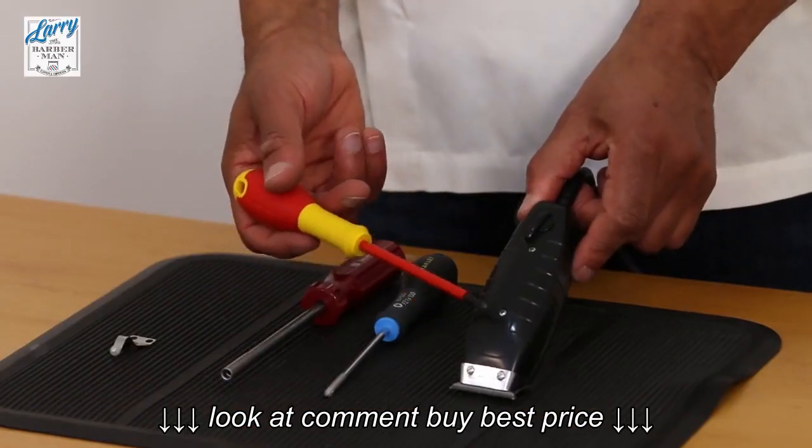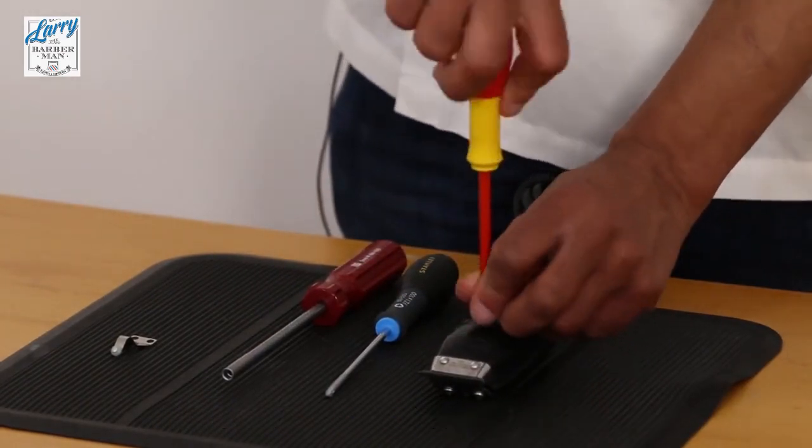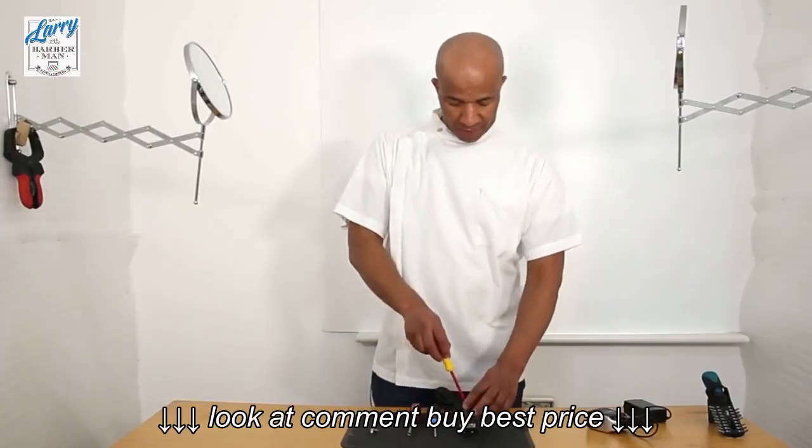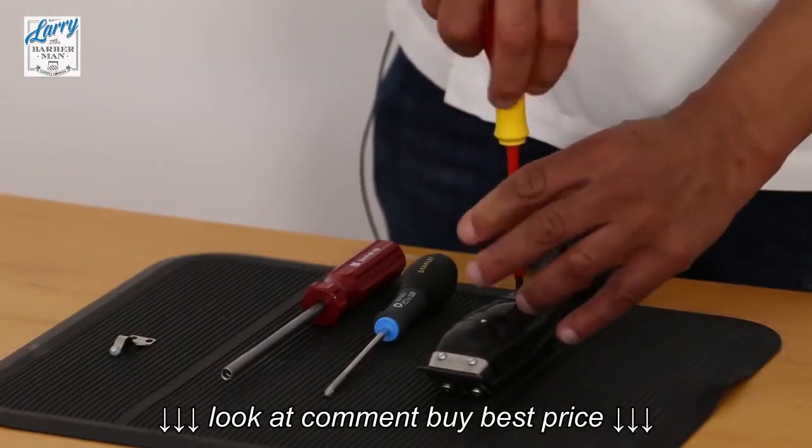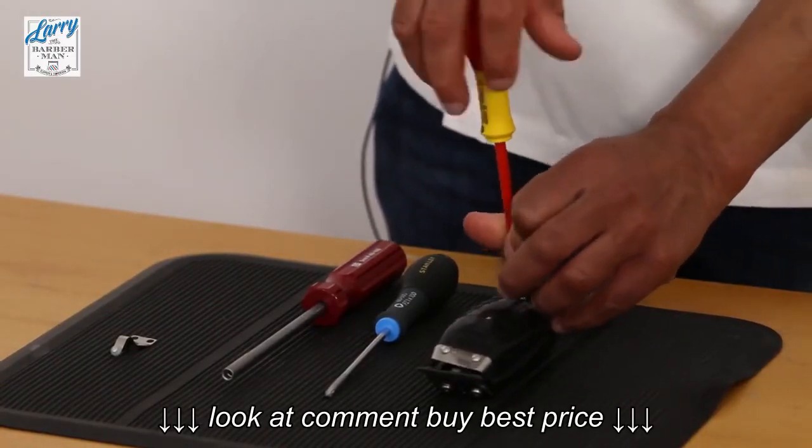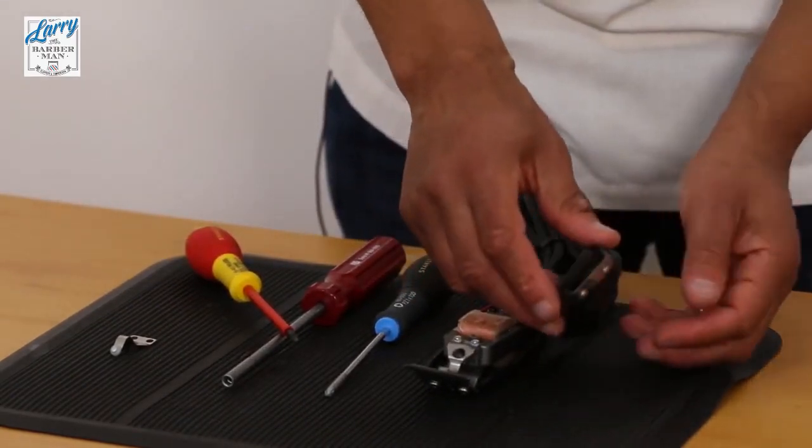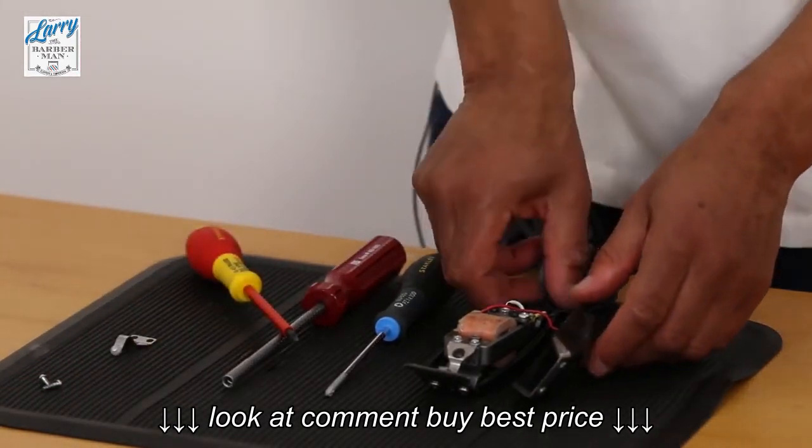First and foremost US model so we need to unscrew these two screws here. That's one, two screws, just fold it out gently. Put your two screws in a safe place preferably on the corrugated mat.